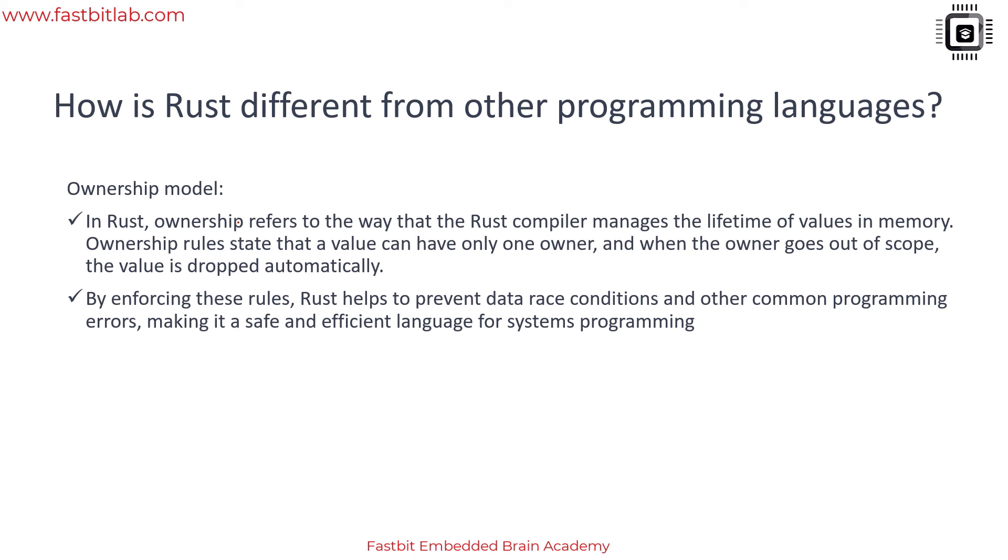We will cover more on ownership later while we do exercises, but in this lecture let's briefly understand what exactly this is with some simple examples. In Rust, ownership refers to the way that the Rust compiler manages the lifetime of values in memory.